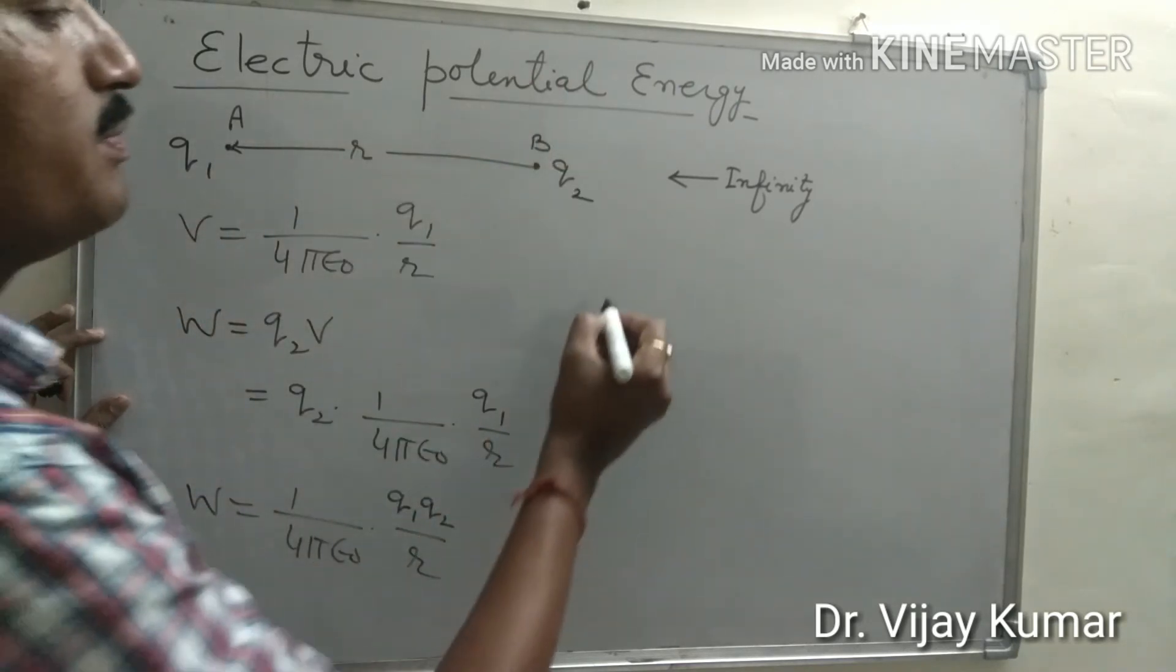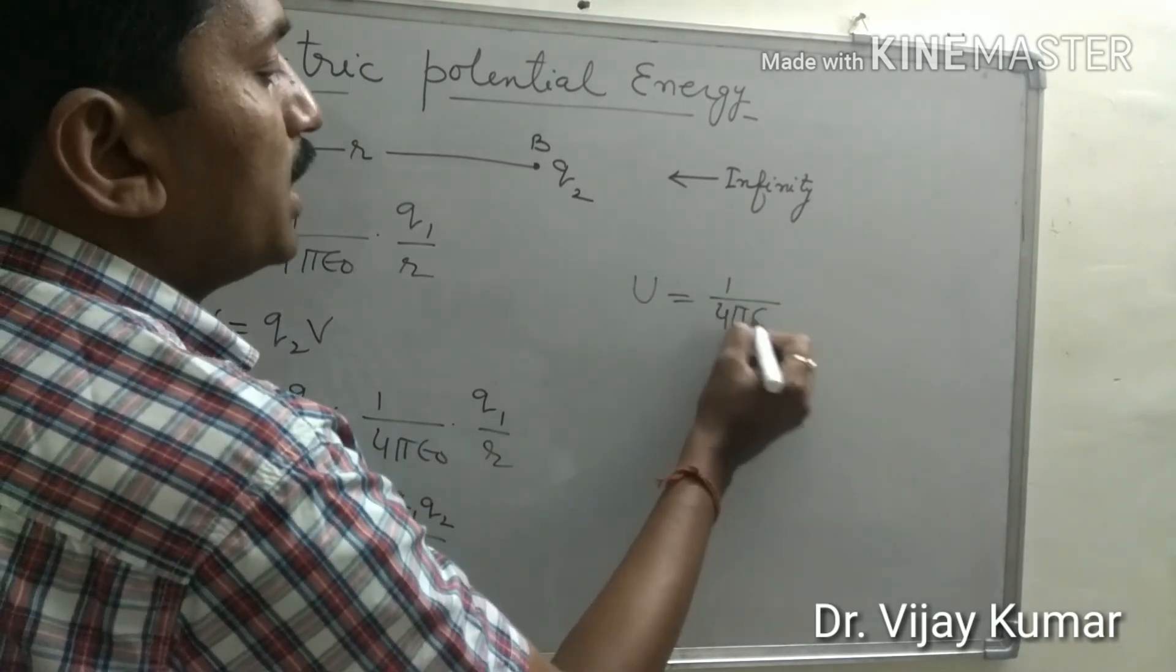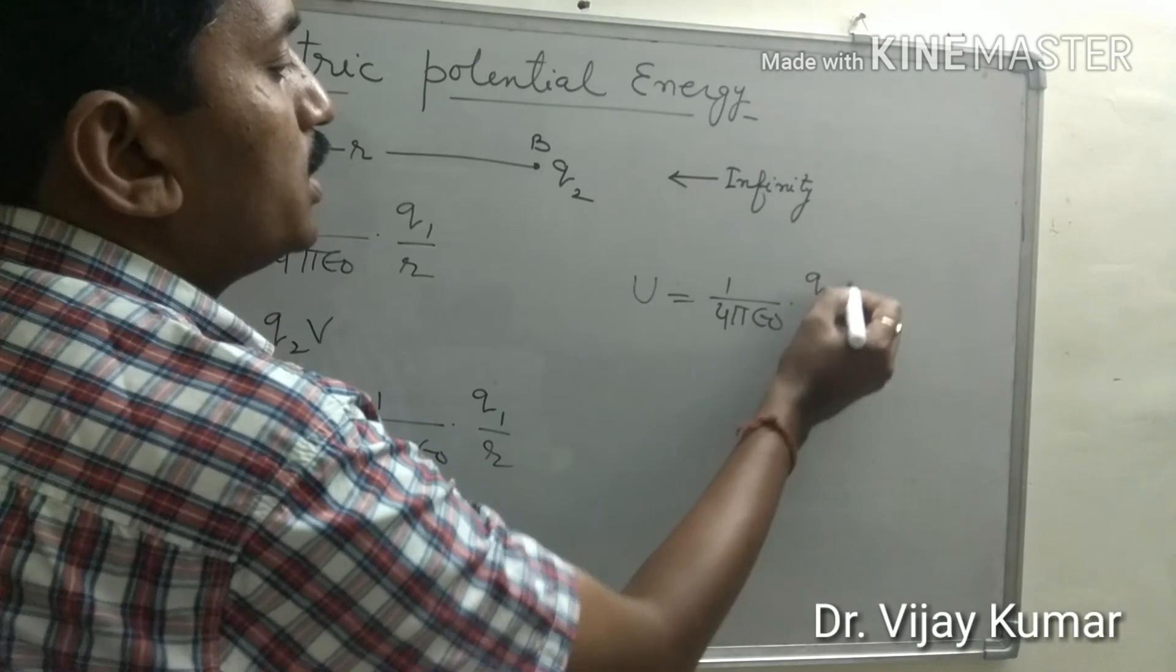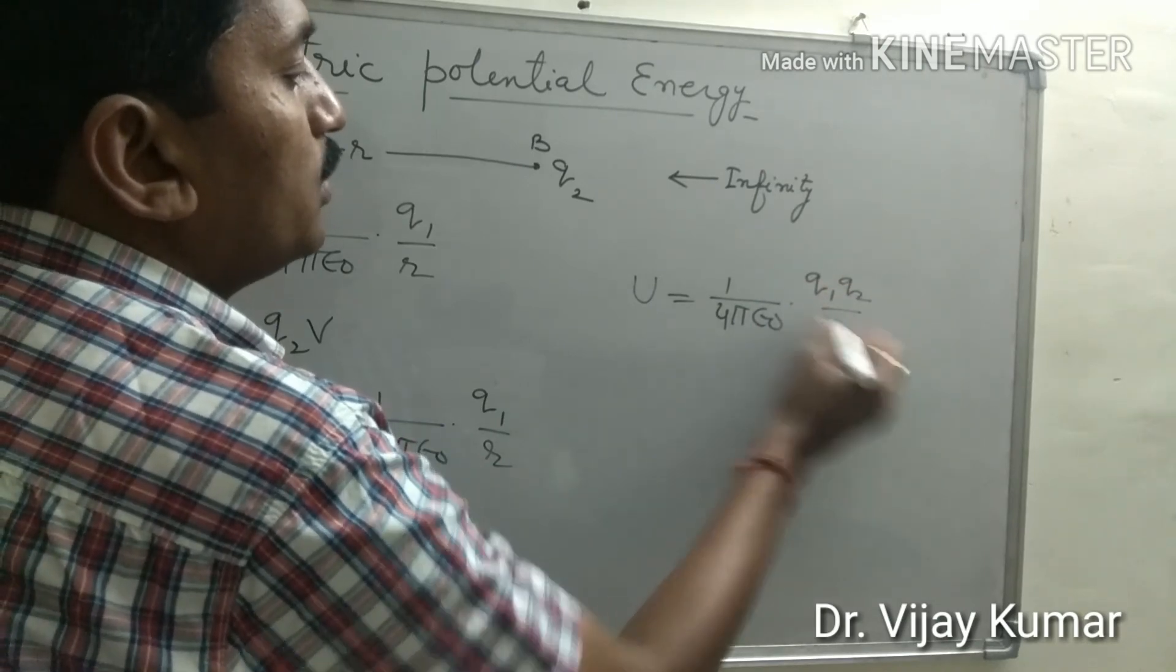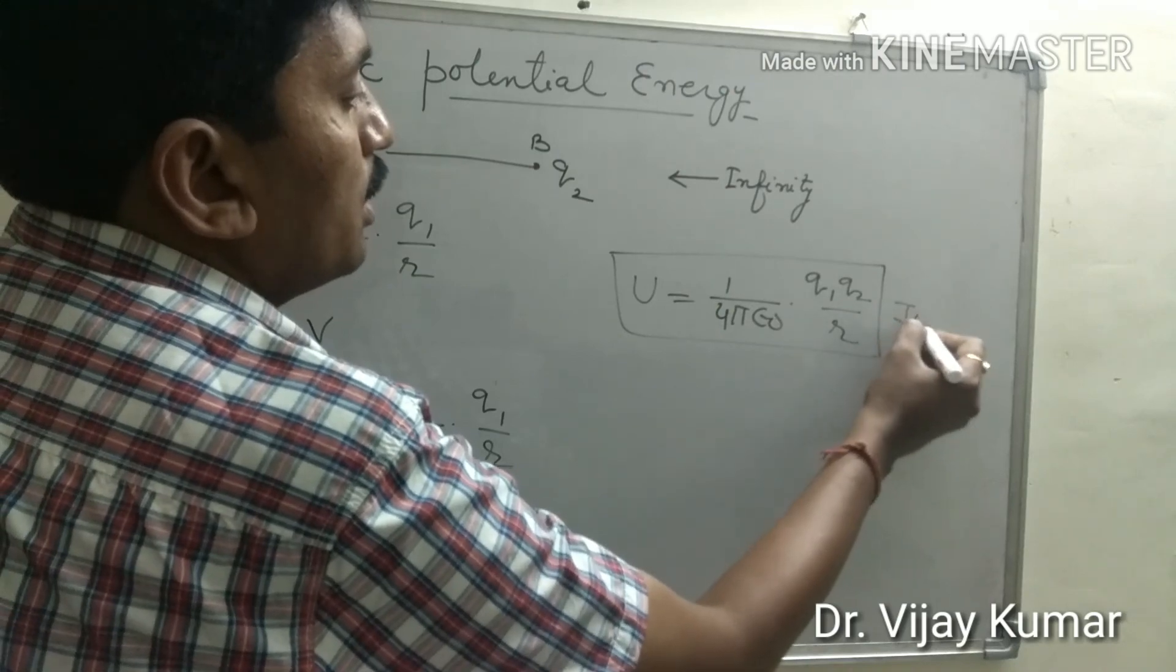This work done is stored in the form of electric potential energy inside the system and it becomes U equals 1 upon 4π epsilon naught Q1 Q2 upon R Joule.